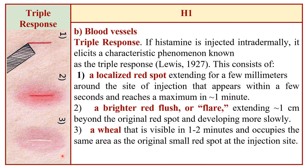The triple response: if histamine is injected intradermally, it produces a triple response — a localized red spot, which converts into a red flush or flare extending approximately 1 cm beyond the original red spot, and then a wheal that is visible in 1 to 2 minutes occupying the same area as the original red spot at the site of injection.